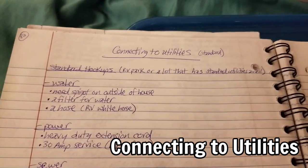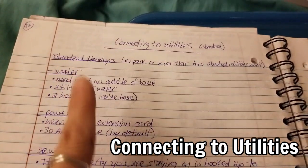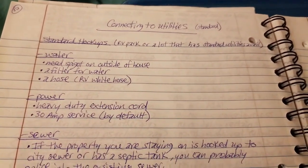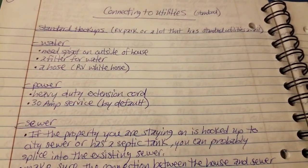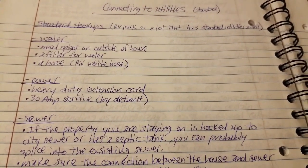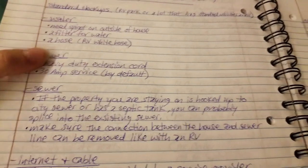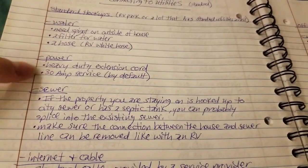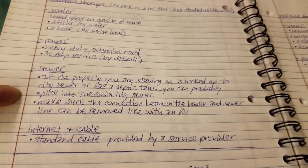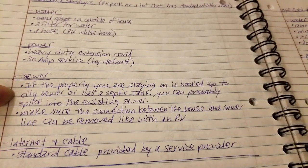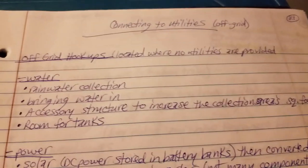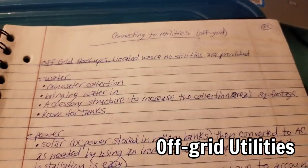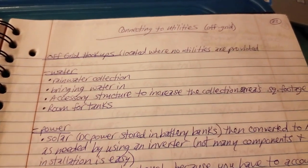Connecting to utilities - I needed to know what standard hookups were. Water - if I was going to need a spigot on the outside of the house, was I going to need a filter for water, a hose? My power - was I going to do 30 amp or 50 amp? Did I need extension cords? My sewer - if property I was staying on is hooked up to the sewer. I just had to make sure all of these things were accounted for. This is what it all entailed if I was to connect to utilities off-grid.